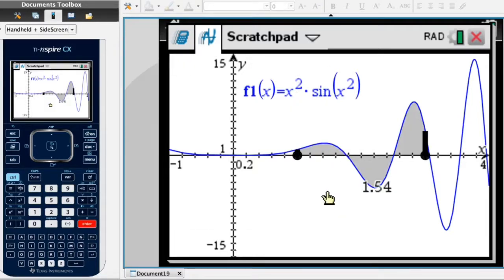The calculator has just evaluated this definite integral. We can see here that it's equal to 1.54. And in fact I'll move that text a little bit so we can see it clearly. There we go. So the definite integral is equal to 1.54.